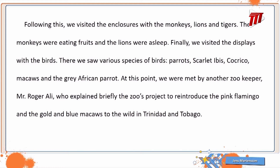Following this, we visited the enclosures with the monkeys, lions, and tigers. The monkeys were eating fruits, and the lions were asleep. Finally, we visited the displays with the birds. There, we saw various species of birds — parrots, scarlet ibis, cocrico, macaws, and the grey African parrot. At this point, we were met by another zookeeper, Mr. Roger Ali, who explained briefly the zoo's project to reintroduce the pink flamingo and the gold and blue macaws to the wild in Trinidad.